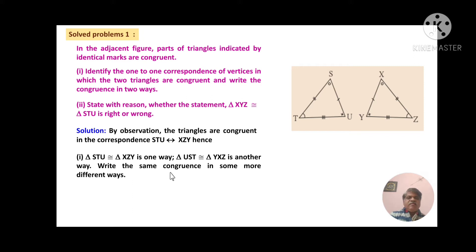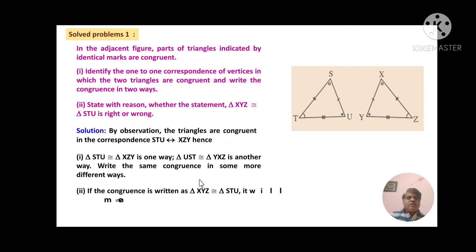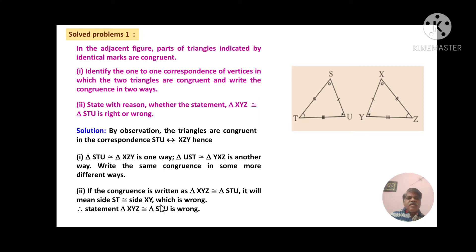You can also write the same congruence in more different ways. If the congruence is written as triangle XYZ congruent with triangle STU, it would mean side ST is congruent with side XY, which is wrong. Therefore the statement 'triangle XYZ is congruent with triangle STU' is a wrong one.